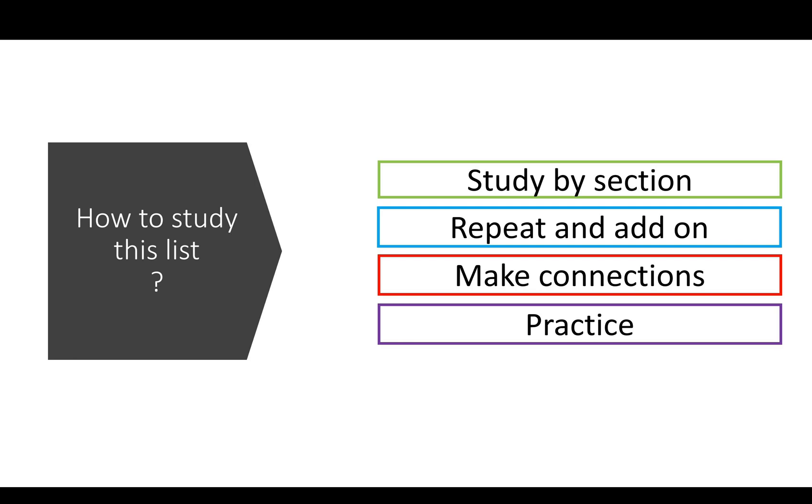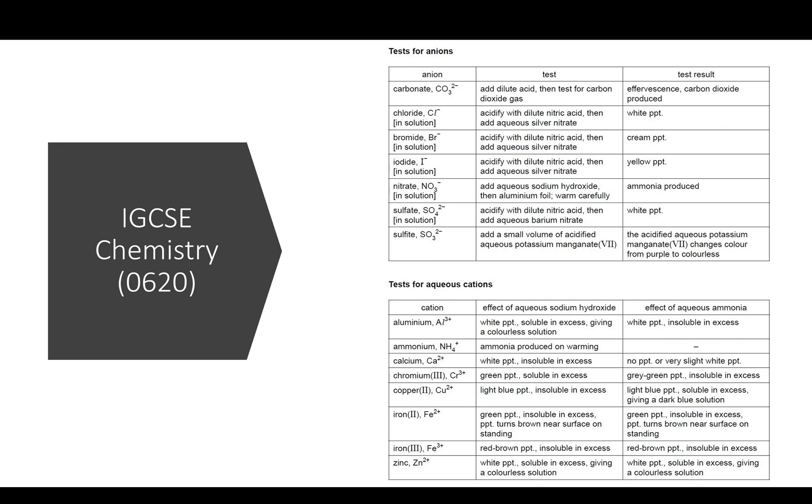This is best by actually doing experiments, practice with past practical exam papers to identify given ions. You can also practice with questions about ion identification. For our discussion today, I'm using this list from IGCSE paper 5 because it contains most of the required ion tests in other syllabi.